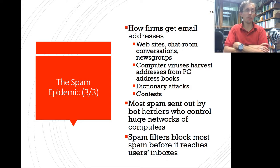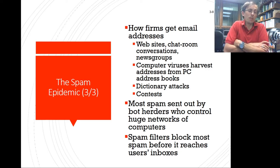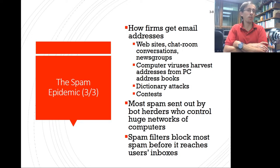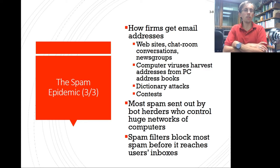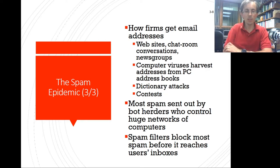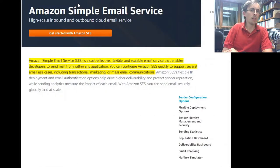Most spam is sent by bot herders who control huge networks of computers. Spam filters block most spam before it reaches users' mailboxes. Early systems used domain blacklists, which weren't very good. They moved to Bayesian networks, which provided better results. Today, combinations of Bayesian networks and neural networks are used to generate pretty effective anti-spam systems.